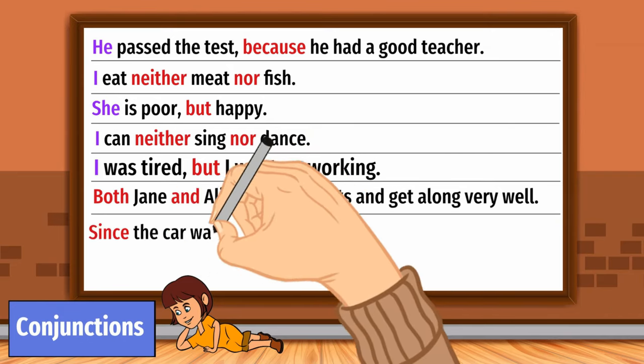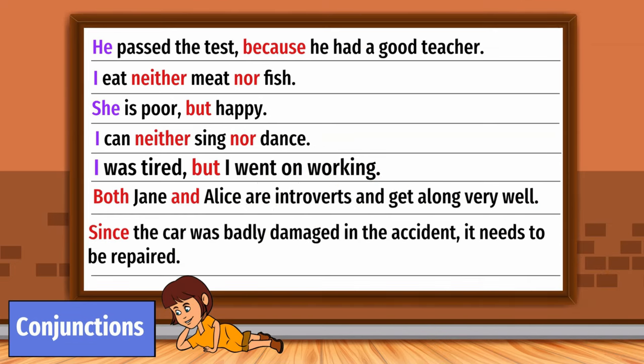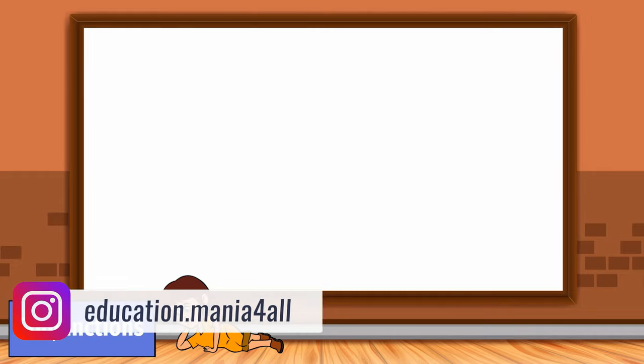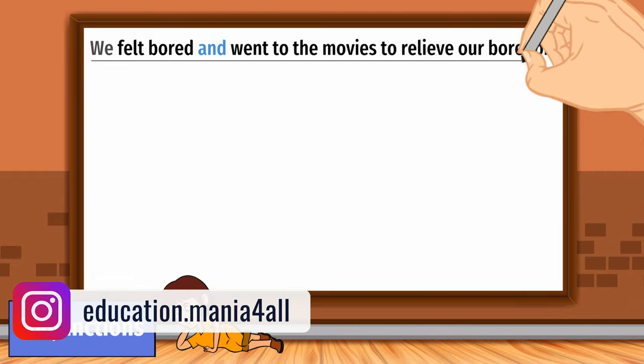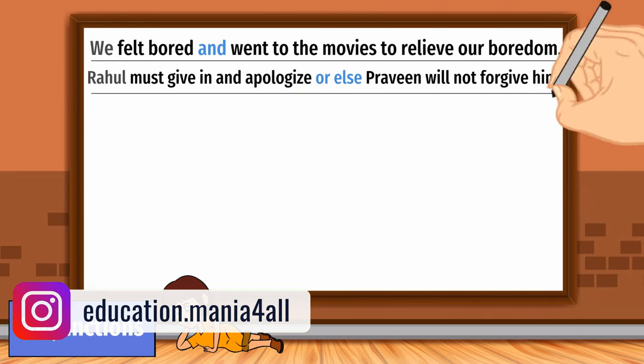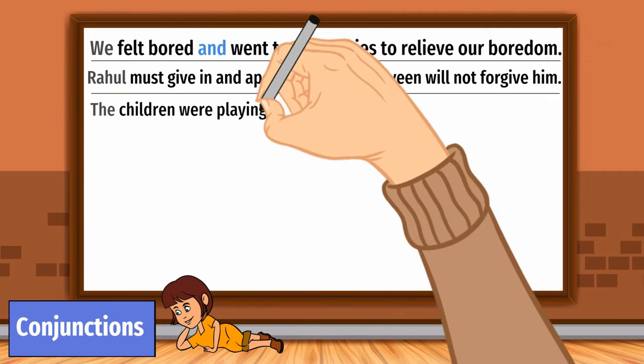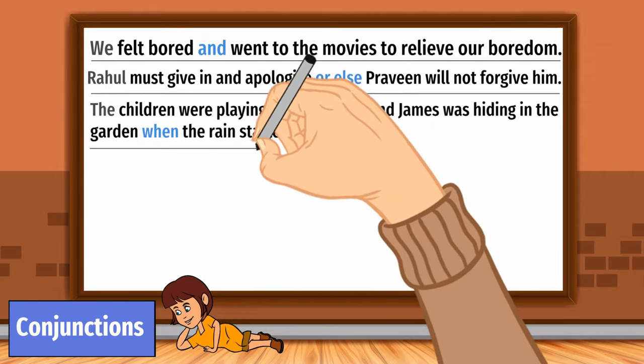Since the car was badly damaged in the accident, it needs to be repaired. We felt bored and went to the movies to relieve our boredom. Rahul must give in and apologize or else Praveen will not forgive him. The children were playing hide and seek and James was hiding in the garden when the rain started pouring down.